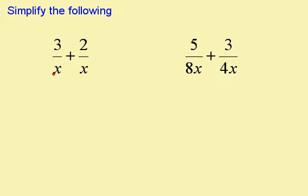In this question, I can immediately see that I have a common denominator. So my answer is simply going to be 3 plus 2 over x. 3 plus 2 is 5 over x.